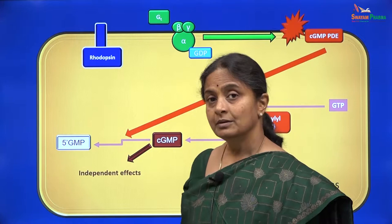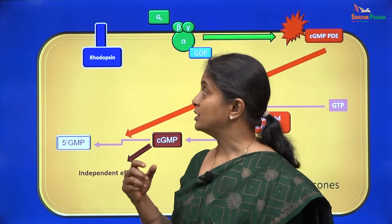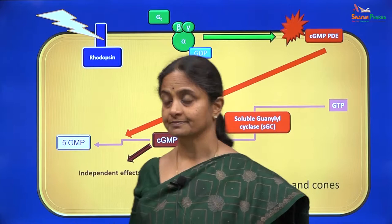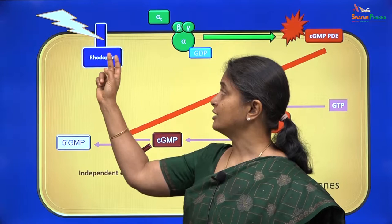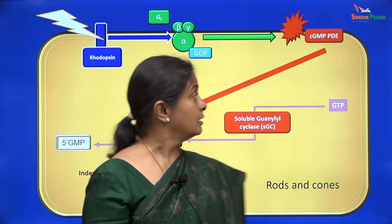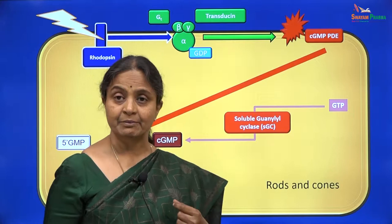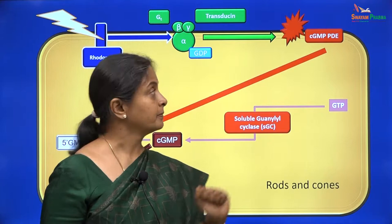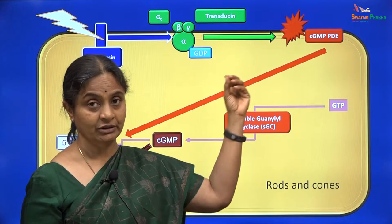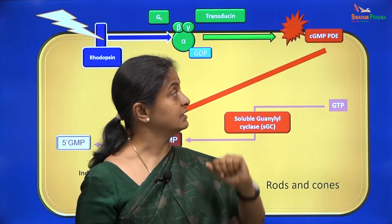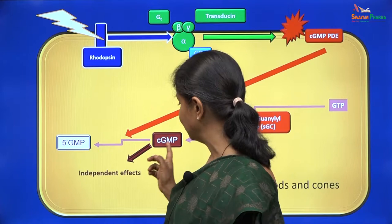The G protein coupled receptor — the protein on the membrane which responds to light — is what we call rhodopsin in the rods. Light striking rhodopsin will activate the G protein, the GT type of G protein, which gets the special name transducin — the 'T' here is actually for transducin. Once this G protein is activated, the alpha subunit moves along the membrane region and activates the membrane enzyme cGMP phosphodiesterase, which reduces cGMP levels in the rods and cones.